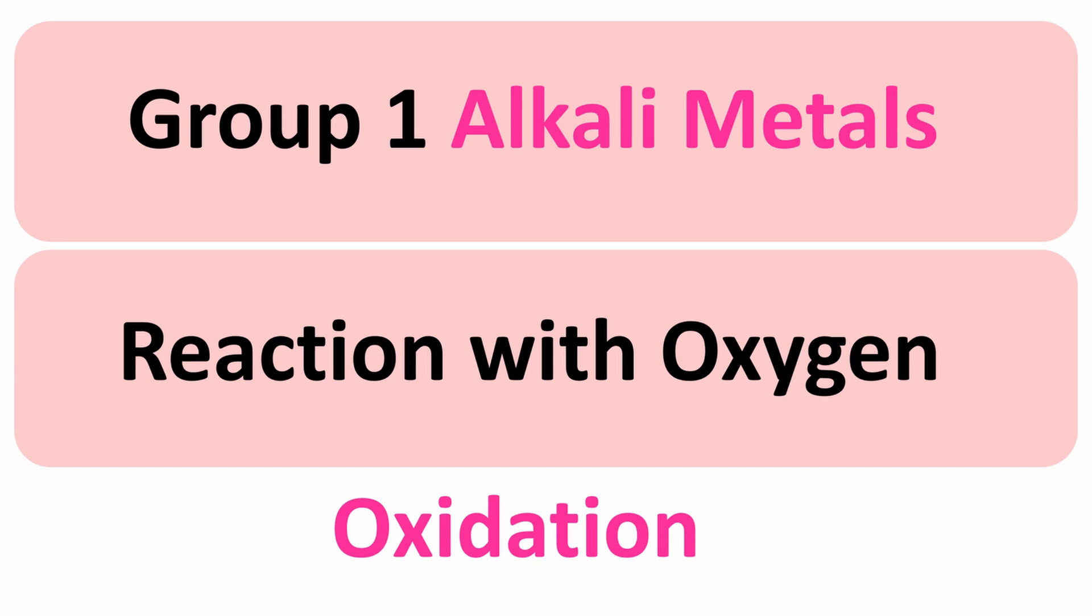It quickly reacts with oxygen in the air and forms a dull white layer of the metal oxide, whichever alkali metal it is, it forms an oxide of that metal on the surface. So we'll be looking at these reactions in more detail with the word and symbol equations.